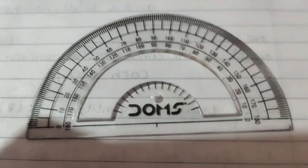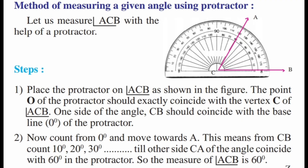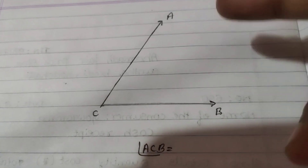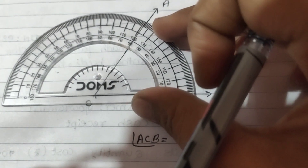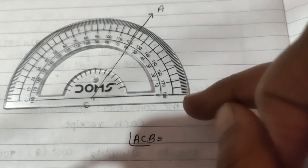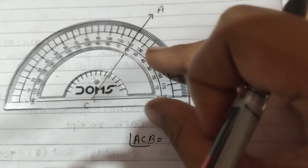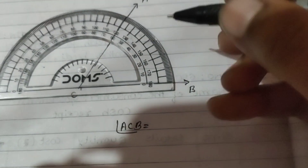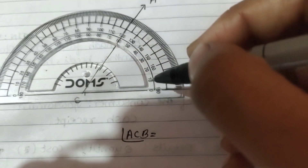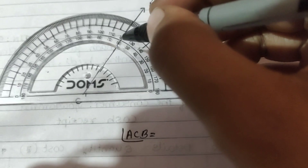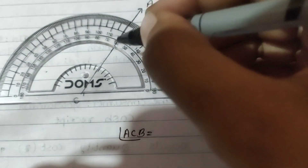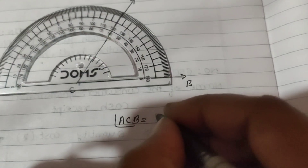Method of measuring a given angle using a protractor: let us measure angle ACB with the help of a protractor. Place the protractor so that point C coincides with the center. Align one side of the angle with the zero line. Now count: 0, 10, 20, 30, 40, 50, 60. The line coincides at 60. So angle ACB is equal to 60 degrees.